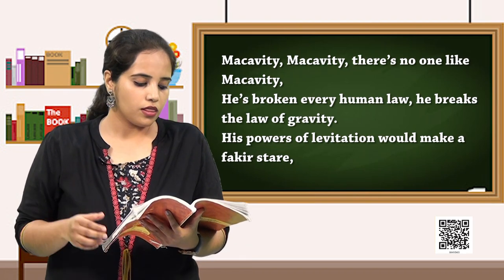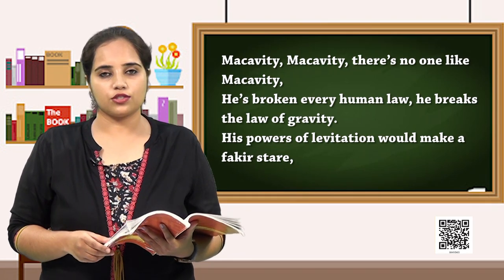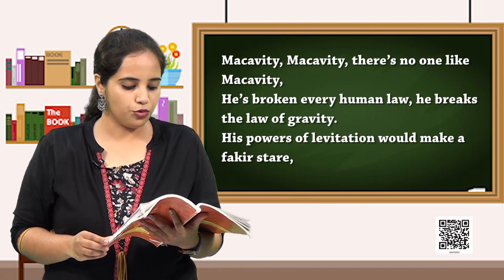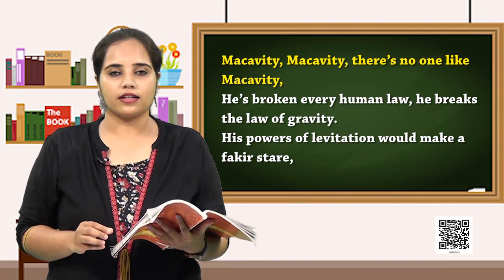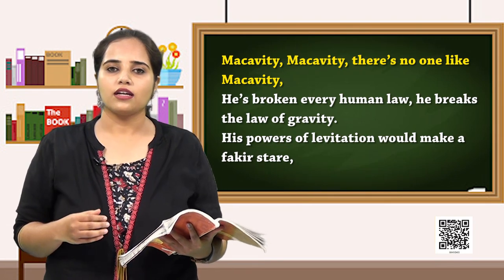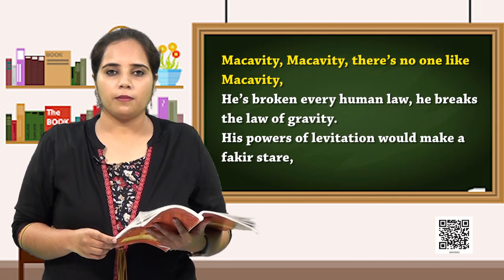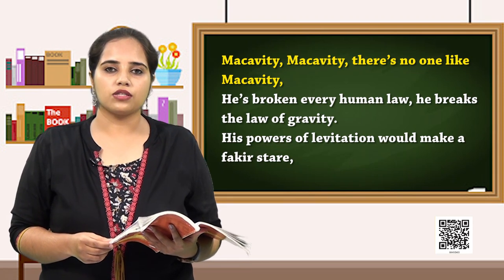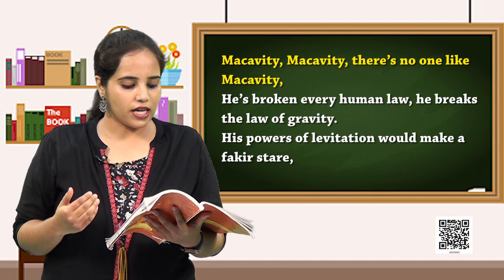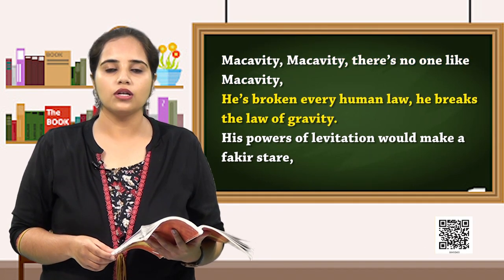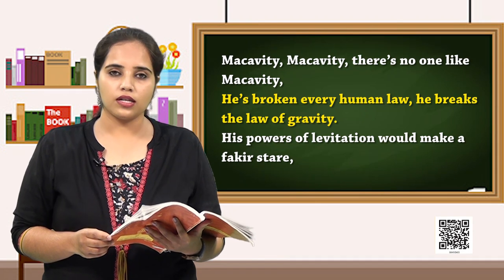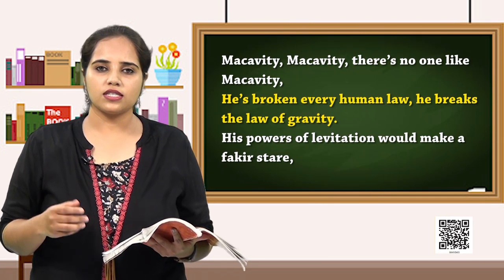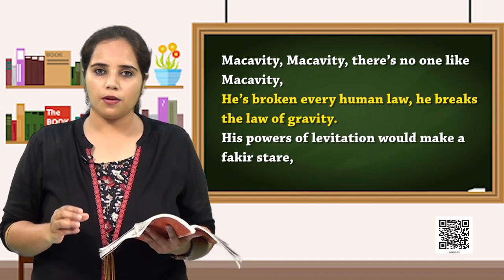Here in the second stanza, the poet tries to highlight the characteristics of Macavity. The first line of stanza 2 emphasizes the fact that Macavity is so unique and there is nobody like Macavity. Macavity is somebody who has a special trait of absconding mysteriously and as quickly as possible from the crime scene. He is able to break every human law — a human law being a social restriction or rule made by humans to be followed by everyone. So here Macavity is able to defy all human laws, not following any rules and regulations set by the government.